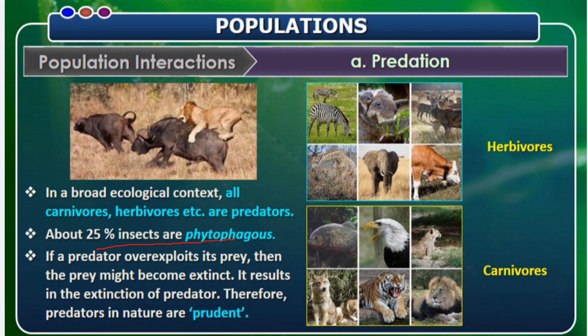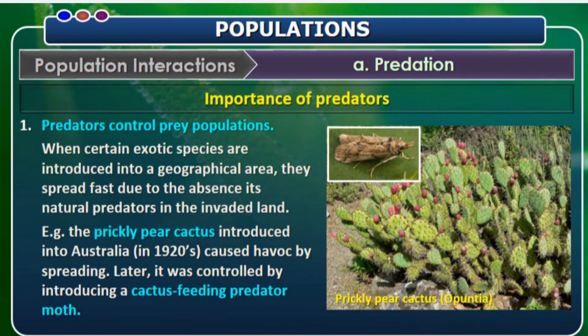Prudent means if prey is present in abundance, it doesn't eat all of them. It only eats what it needs so that it keeps food available for the next period of time. Predators are also responsible for controlling the prey population. This is explained by the example of introduction of cactus weed in Australia in the year 1920. These cacti spread widespread, and measures were taken by the government to control the cactus weed. For that, they introduced a moth which feeds upon the cactus plants, so that the prey population is kept in control.